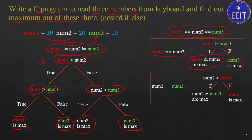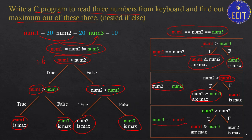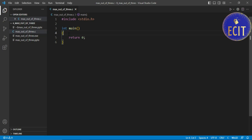Similarly, if num2 and num3 are equal, we compare one of them with num1. If true, num2 and num3 are maximum; otherwise num1 is maximum. The third pair is num3 and num1 being equal — we check against num2 and determine whether num1 and num3 are maximum or num2 is maximum. These are all the possible conditions: all three equal, two equal, or all different.